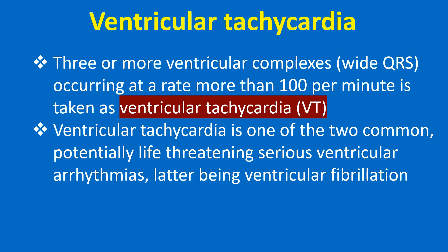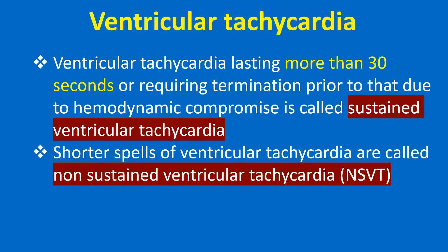Three or more ventricular complexes with wide QRS occurring at a rate more than 100 per minute is taken as ventricular tachycardia or VT. Ventricular tachycardia is one of the two common potentially life-threatening serious ventricular arrhythmias, the other being ventricular fibrillation. Ventricular tachycardia lasting more than 30 seconds, or requiring termination prior to that due to hemodynamic compromise, is called sustained ventricular tachycardia.